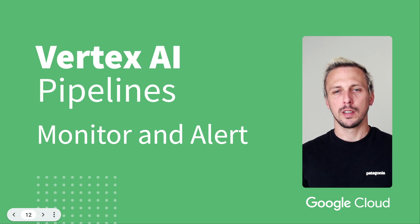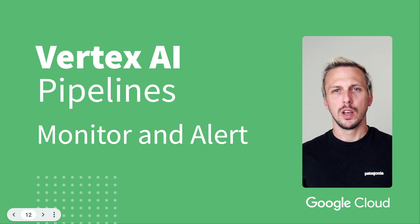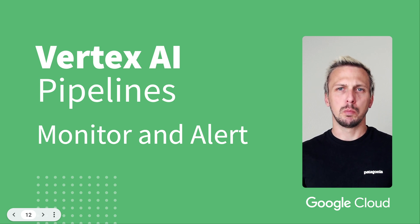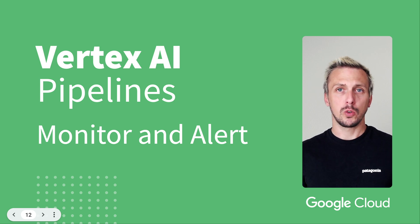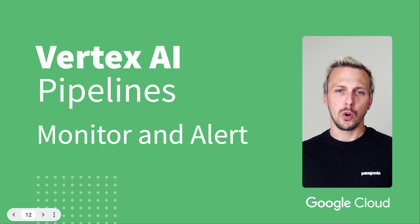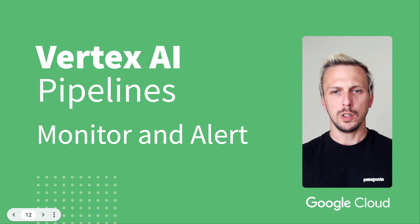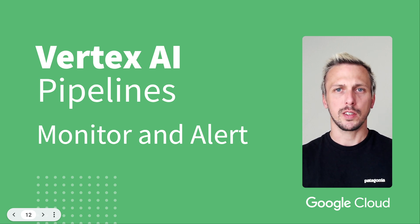Hi, good to have you back. Today's video is about monitoring and alerting with Vertex AI Pipelines. In a production-like environment, you need to be aware if something fails. This also applies for ML Pipelines. Today, we go through the steps needed to set up alerting for failed pipelines. Let's switch over to Google Cloud and get started.